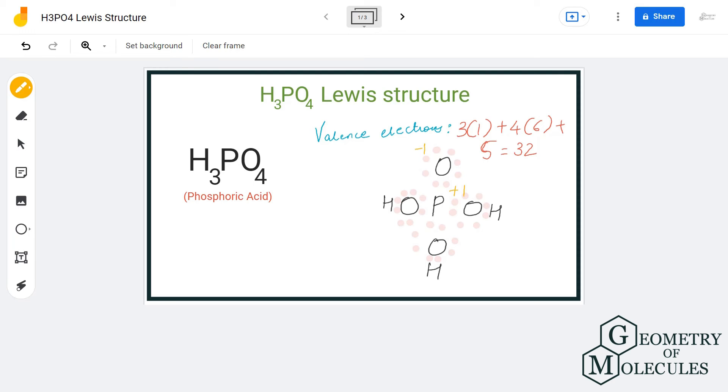And if it is possible, we actually do that. Here we can nullify those charges by shifting a pair of electrons from the oxygen atom. So if you shift a pair of electrons from the oxygen atom in between oxygen and phosphorus atom, it can balance these charges.